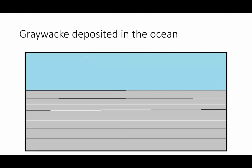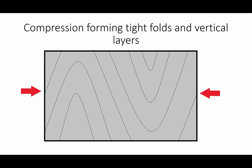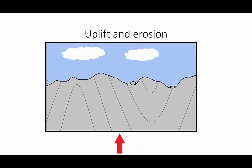Well, long ago, graywacky was deposited in the ocean. Notice that the layers of graywacky are horizontal. Most sedimentary rocks are horizontal when they are first deposited. Then the rocks became deformed into tight folds by compression. So now the rocks are nearly vertical. The rocks then have to be uplifted to the surface where they can be eroded by the elements.